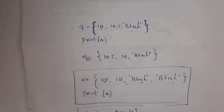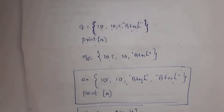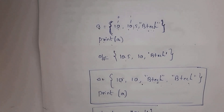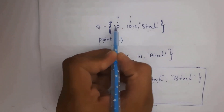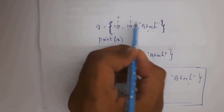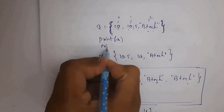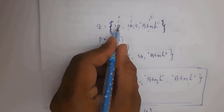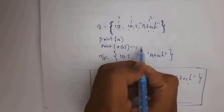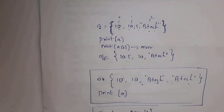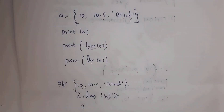Python sets are immutable — that means once we create a set, we cannot perform any modifications on that particular set. This is the meaning of immutable. Also, Python sets do not support indexing. For example, 10 is at index 0, 10.5 at index 1, and btec at index 2. Whenever you write print(a[0]), you would expect value 10, but you will get an error because Python sets do not support indexing.